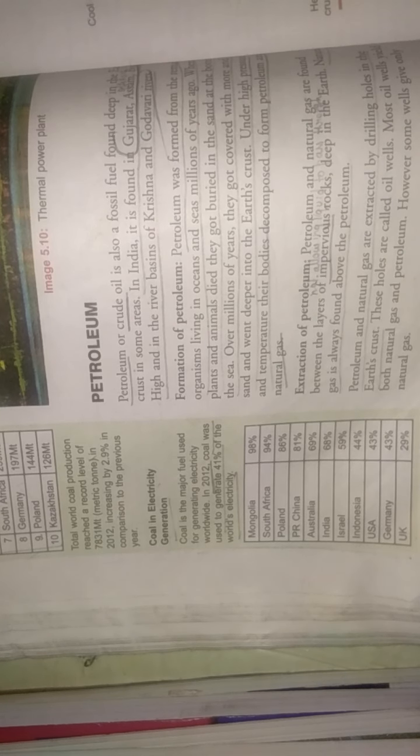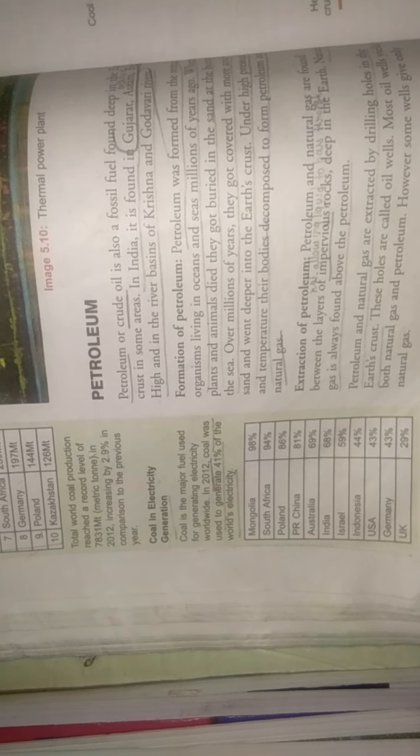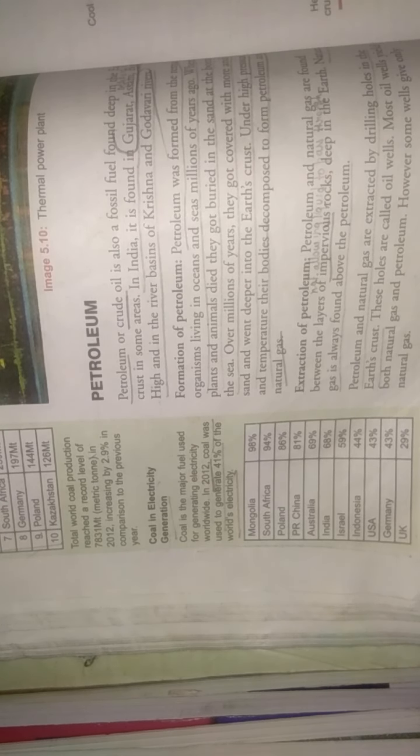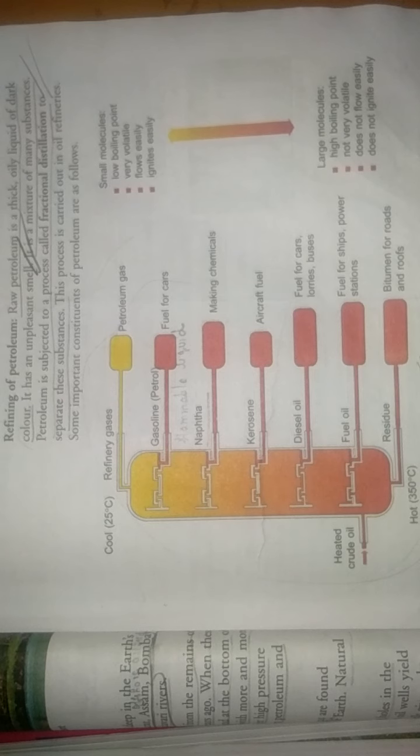The next topic is refining of petroleum. Refining is done because the petroleum extracted from the earth's surface is not pure. The refining of petroleum is done by the process called fractional distillation. This cannot be done simply by sieving. Fractional distillation separates the different components present inside the petroleum.